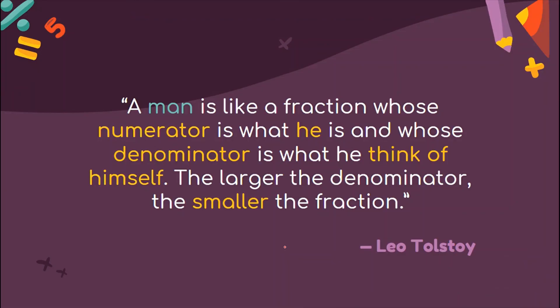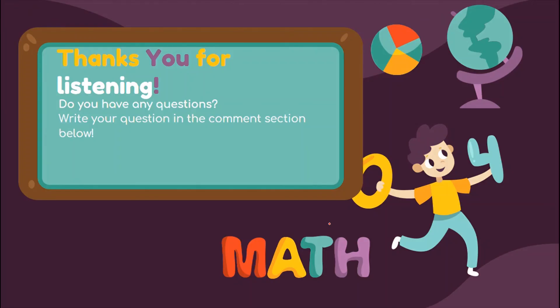Let us ponder with this saying: 'A man is like a fraction whose numerator is what he is and whose denominator is what he thinks of himself. The larger the denominator, the smaller the fraction.' That is the saying from Leo Tolstoy. Thank you so much for listening. I hope you've learned something for this day and hope to see you in our next lesson. Bye-bye!